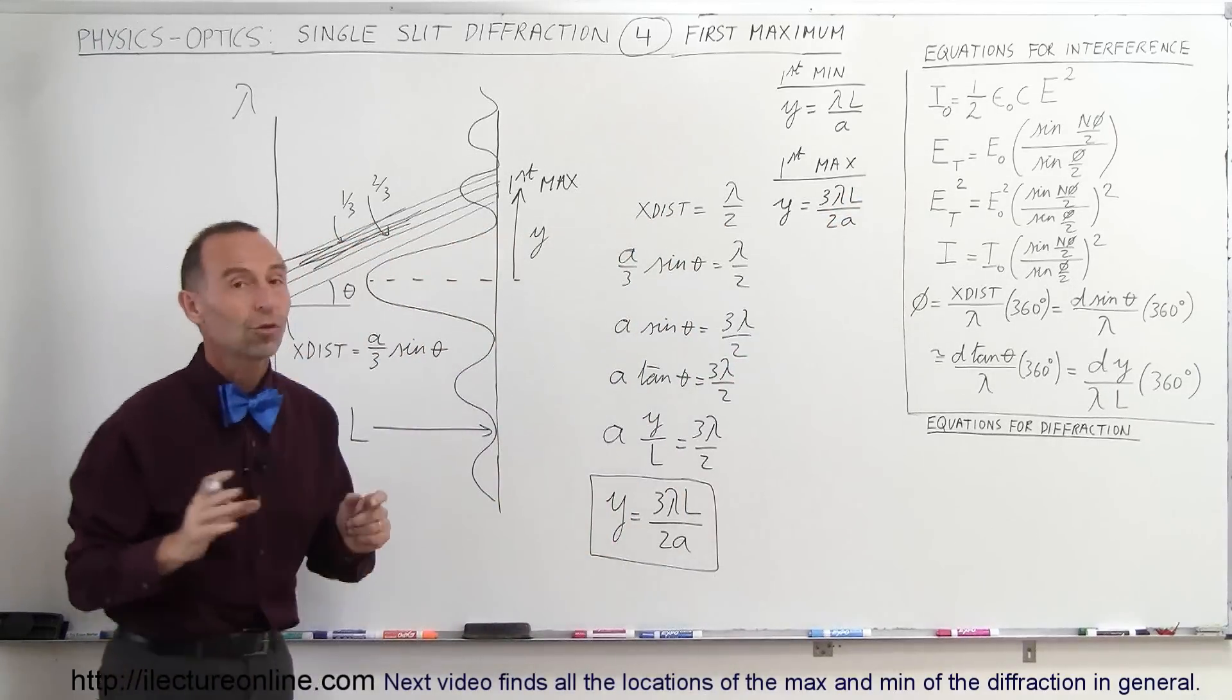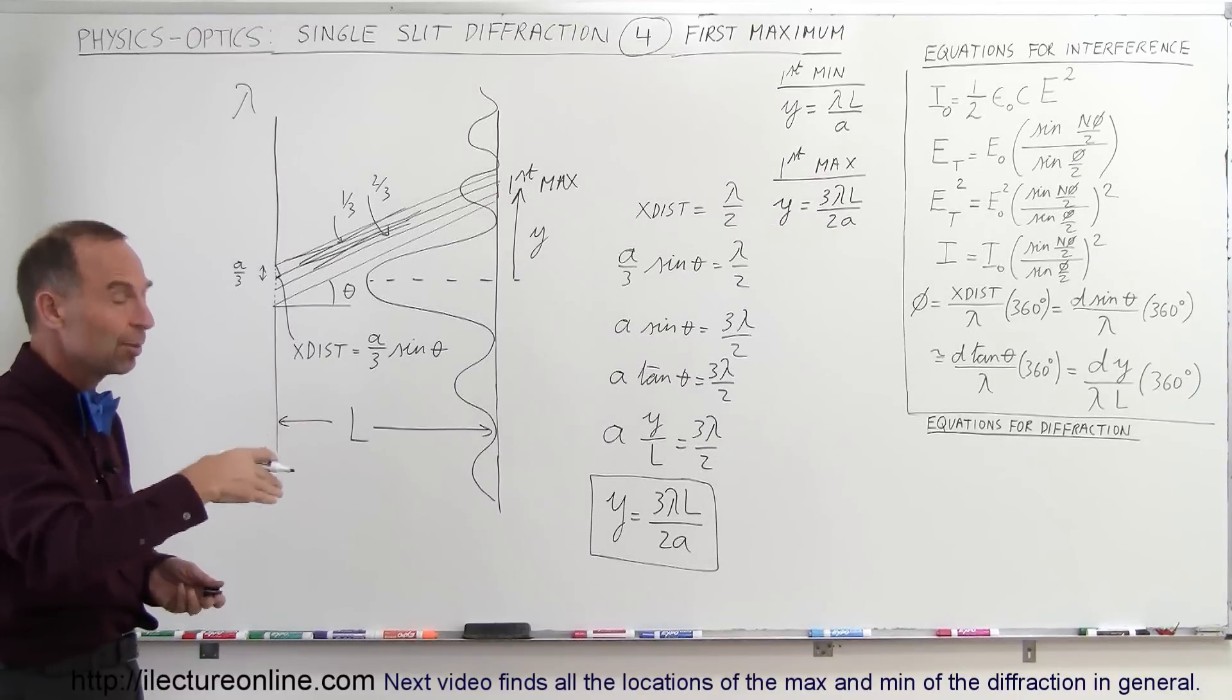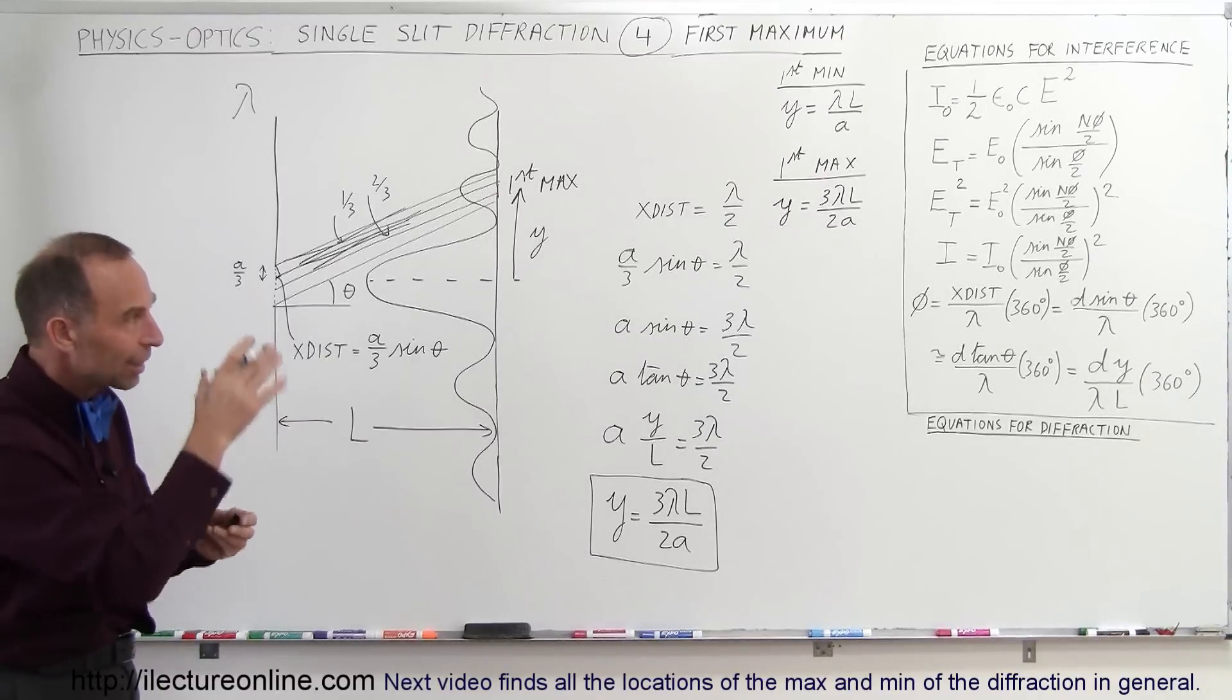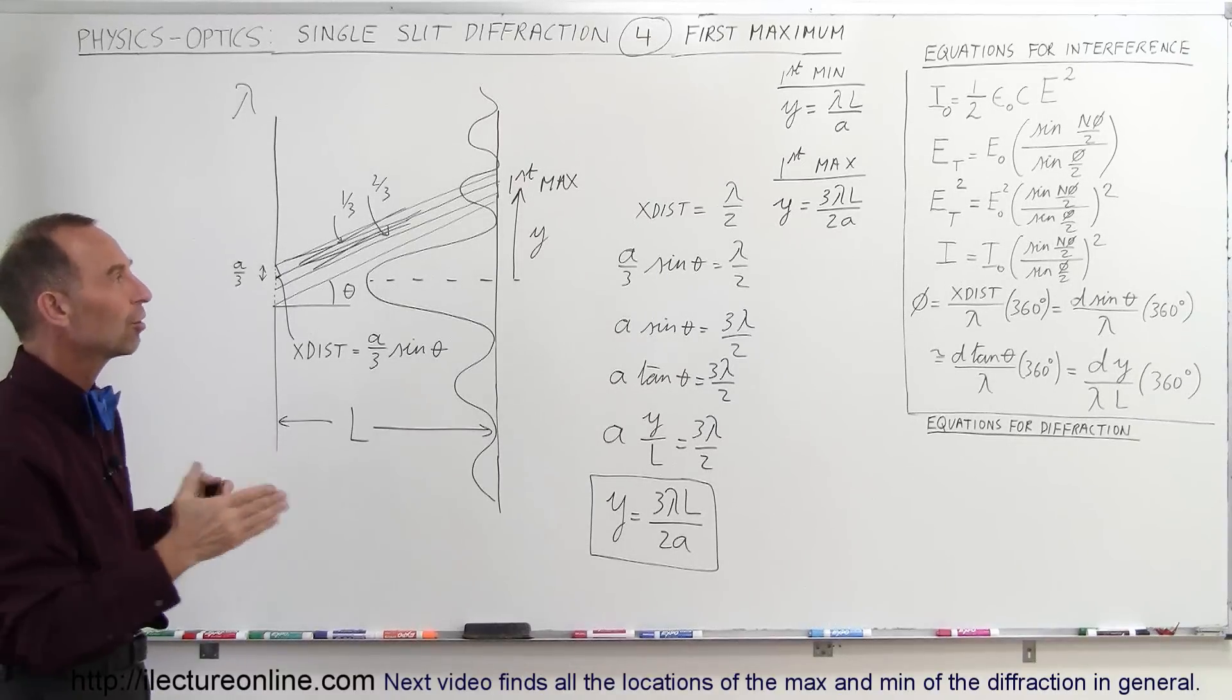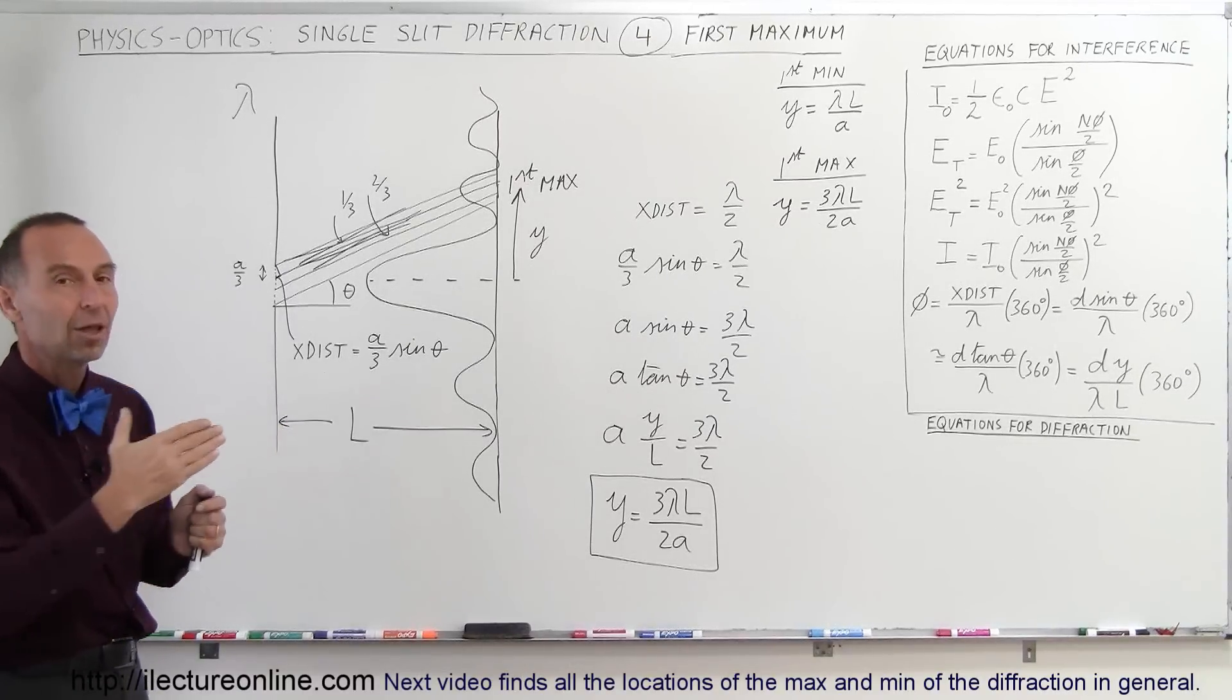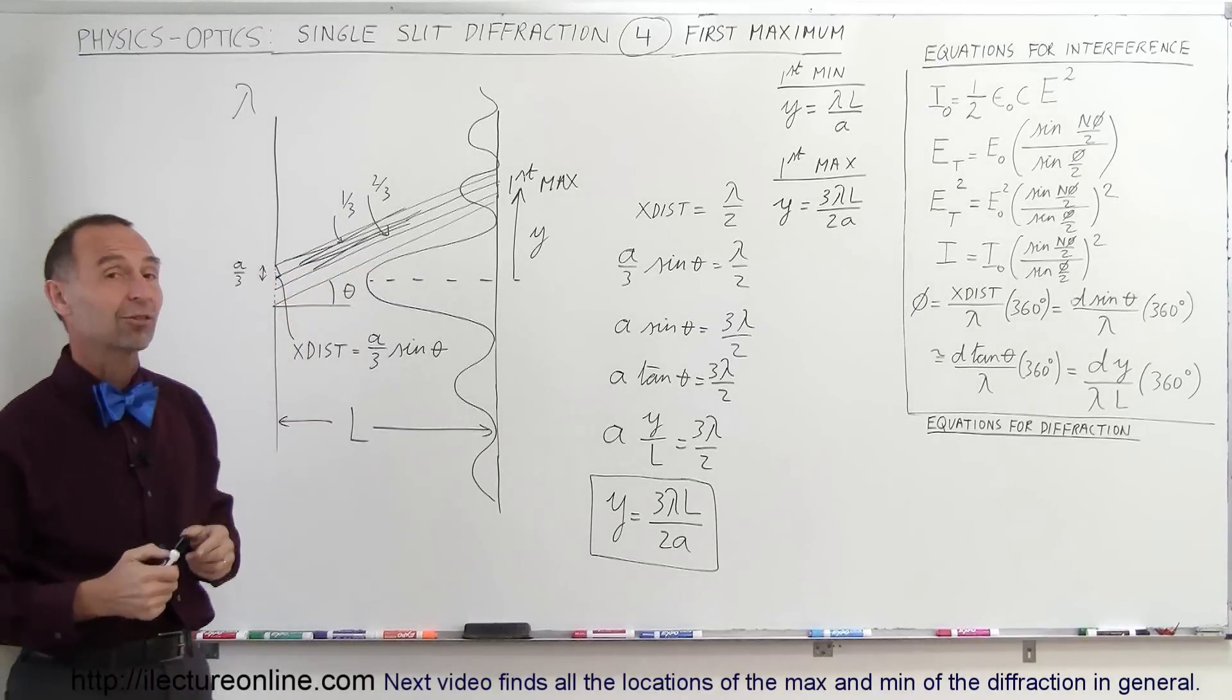Alright, so those are the two that we found, now we're going to find the second minimum, the second maximum, the third minimum, the third maximum, and so forth, and then we'll get a feel for what that pattern is, and then we can write the general equation of where our max and min locations are on the screen based on the diffraction pattern.